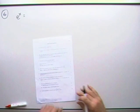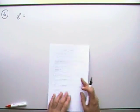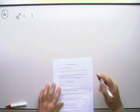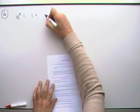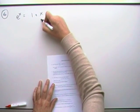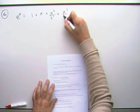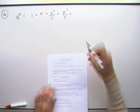Alright, question six. Write down the Maclaurin expansion of e to the x. That's one you should remember. If you remember this, you also remember sine and cos. It's an easy one because it's just 1 plus x over 1 plus x squared over 2 factorial plus x cubed over 3 factorial and so on.